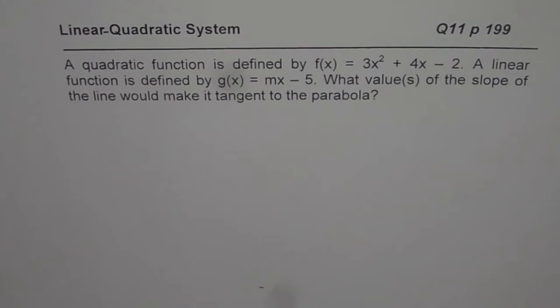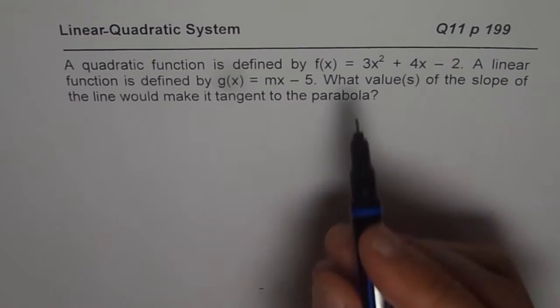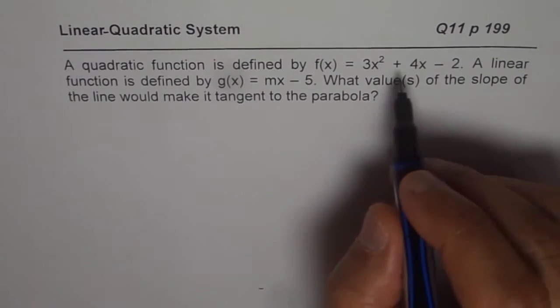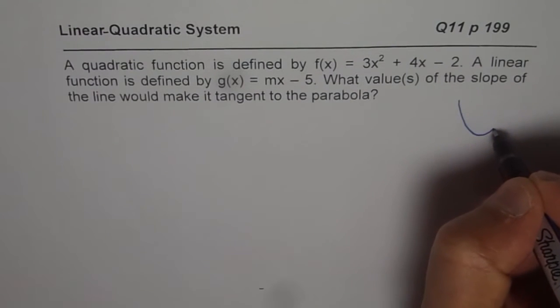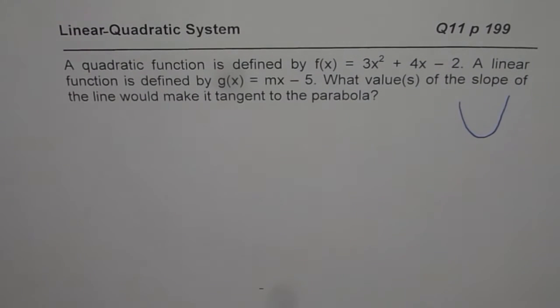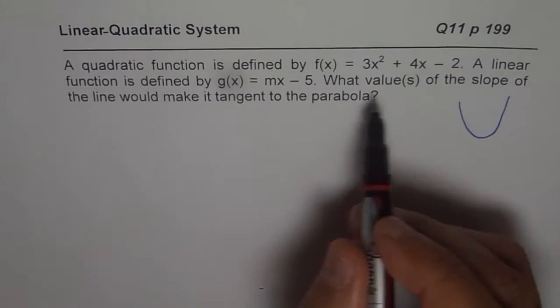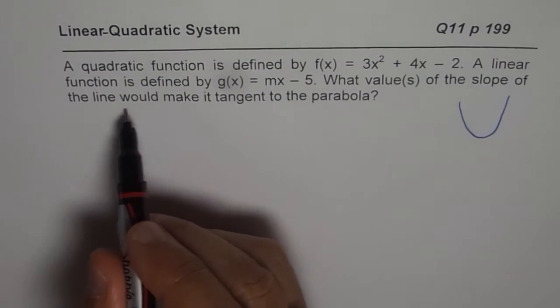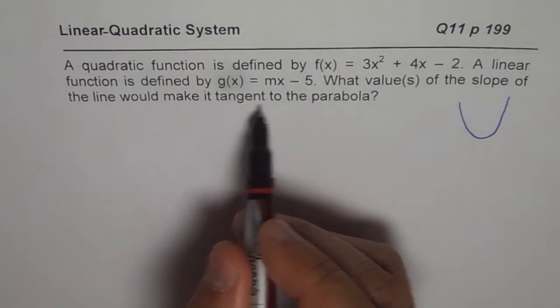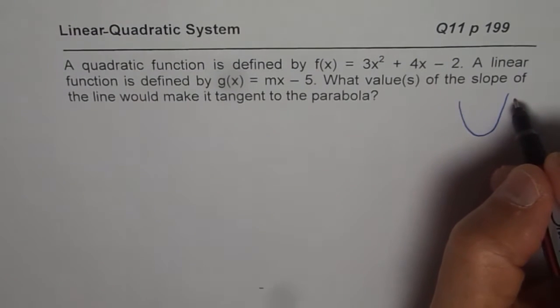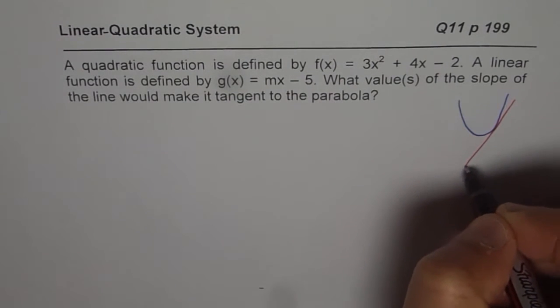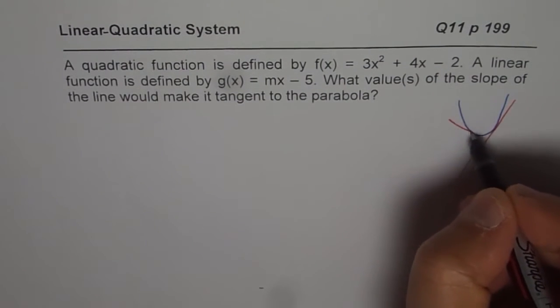So to understand the situation, it is kind of a parabola here given to you and then we have a line. What values of the slope of the line would make it tangent to the parabola? We could have a tangent kind of like this, and we could also have a tangent kind of like this.